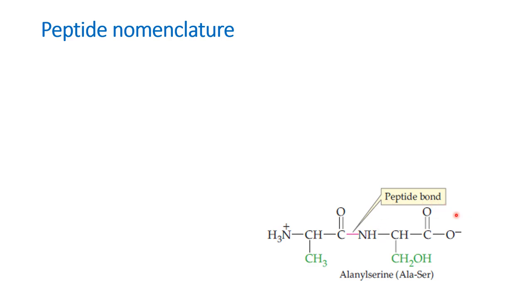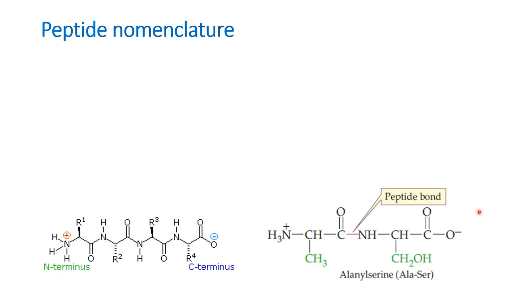We will see some of the basic nomenclatures of writing a peptide name and also writing a peptide structure. The amino acid which has a free amino group is written on the left-hand side, and the amino acid that has a free carboxyl group is written on the right-hand side. This is the convention for representing a peptide.